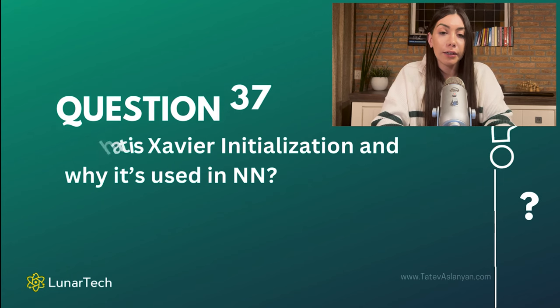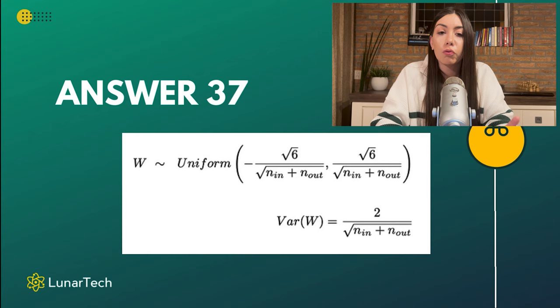The key idea behind Xavier initialization is to keep the variance of the activations and gradients consistent across layers. The way it is done is by setting the initial weights based on the number of input and output neurons in a neural network.